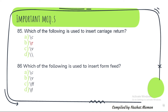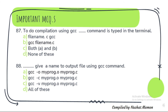Question 86: Which of the following is used to insert form feed? For form feed, you will use \f — option D. Question 87: To do compilation using GCC, which command is typed in the terminal? The correct option is option B — gcc filename.c.